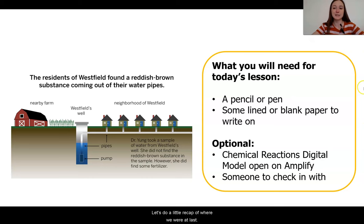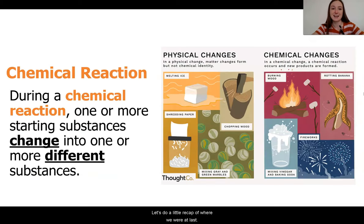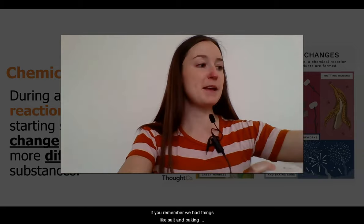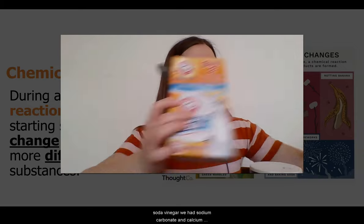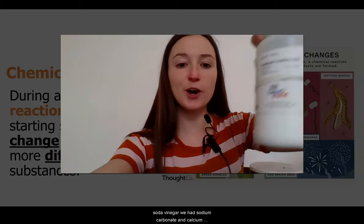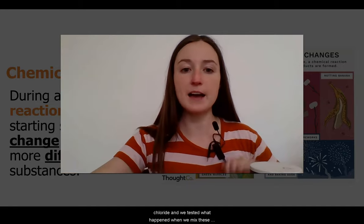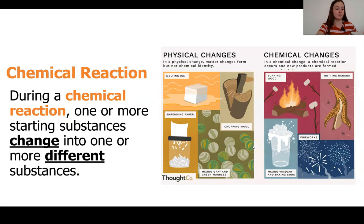So, let's do a little recap of where we were at last time. In our last lesson, we did some investigations by mixing some different substances together. If you remember, we had things like salt and baking soda, vinegar, we had sodium carbonate and calcium chloride, and we tested what happened when we mixed these different things together. Now, in some of our mixtures, we noticed that the result looked really different than the things that we started out with.